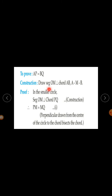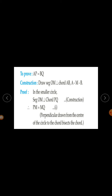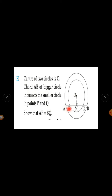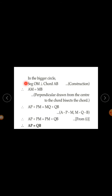Construction: Draw segment OM perpendicular to chord AB such that A-M-B. Proof: In the smaller circle, segment OM is perpendicular to chord PQ. Therefore PM = MQ, because a perpendicular drawn from the center of the circle to the chord bisects the chord. This is equation 1.